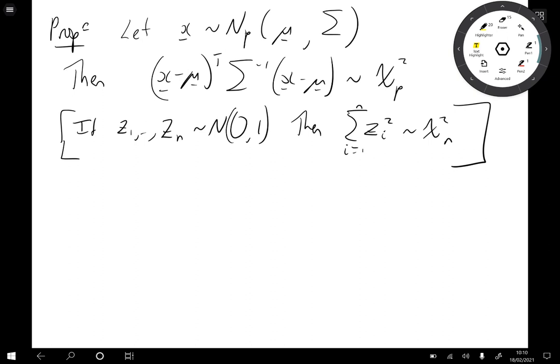So we can see that this is doing something similar to this. We've got these points x that are in Rp. We are making them zero mean by subtracting μ. Then we're scaling them by the variance. And that gives us chi-squared.